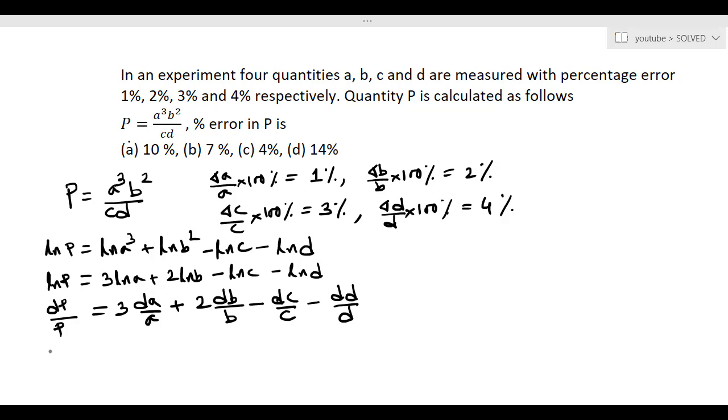So the error in the measurement of P, that is delta P by P, this fractional or relative error is equal to 3 delta A by A plus 2 delta B by B plus delta C by C plus delta D by D. Here we have taken the plus sign because in the measurement of error, the errors are always added.